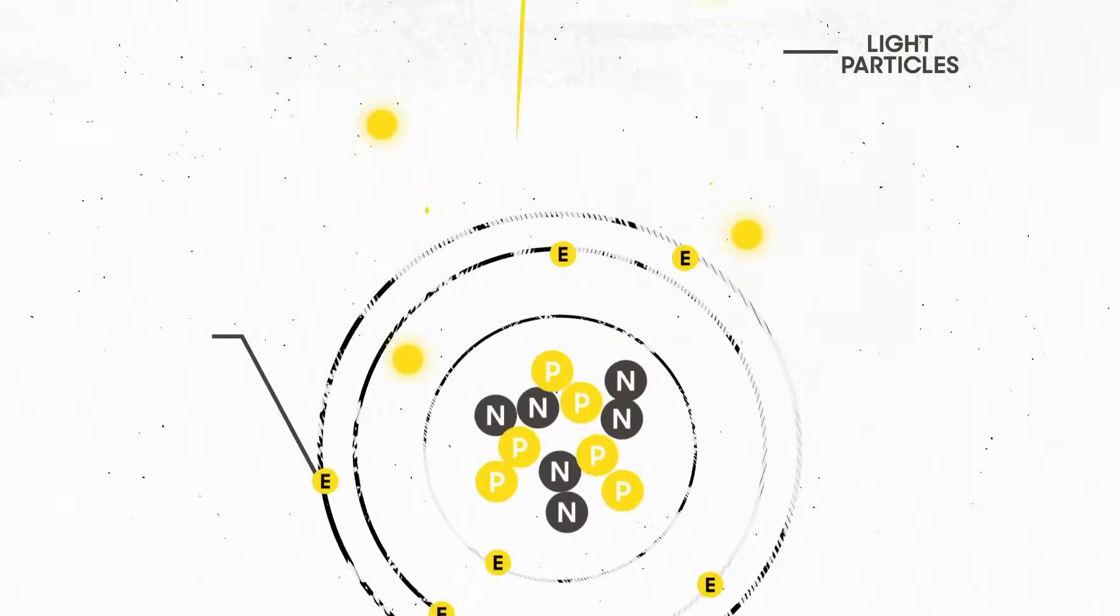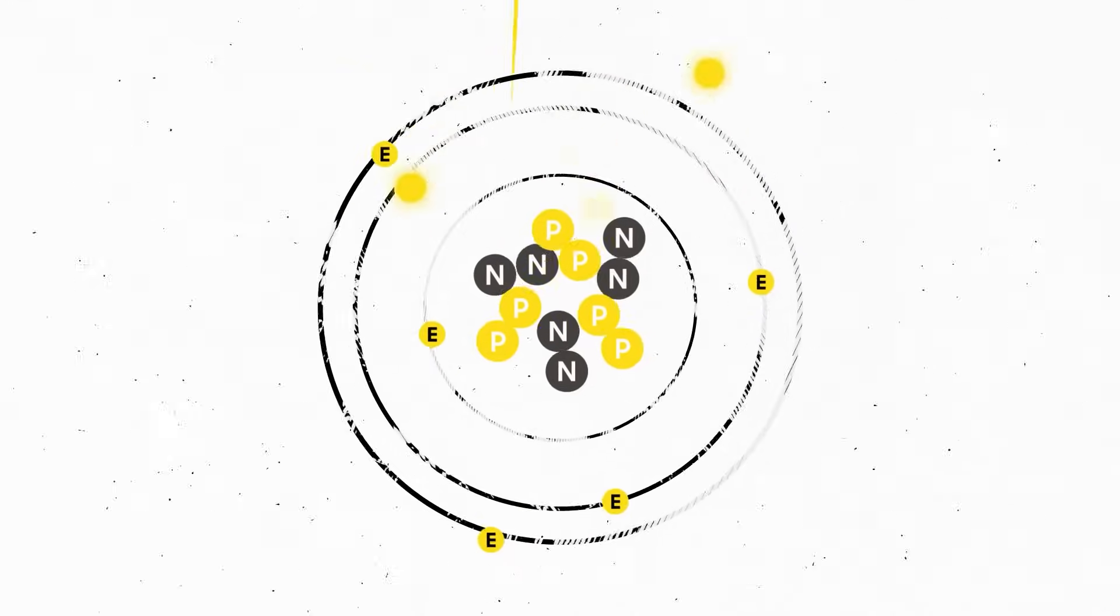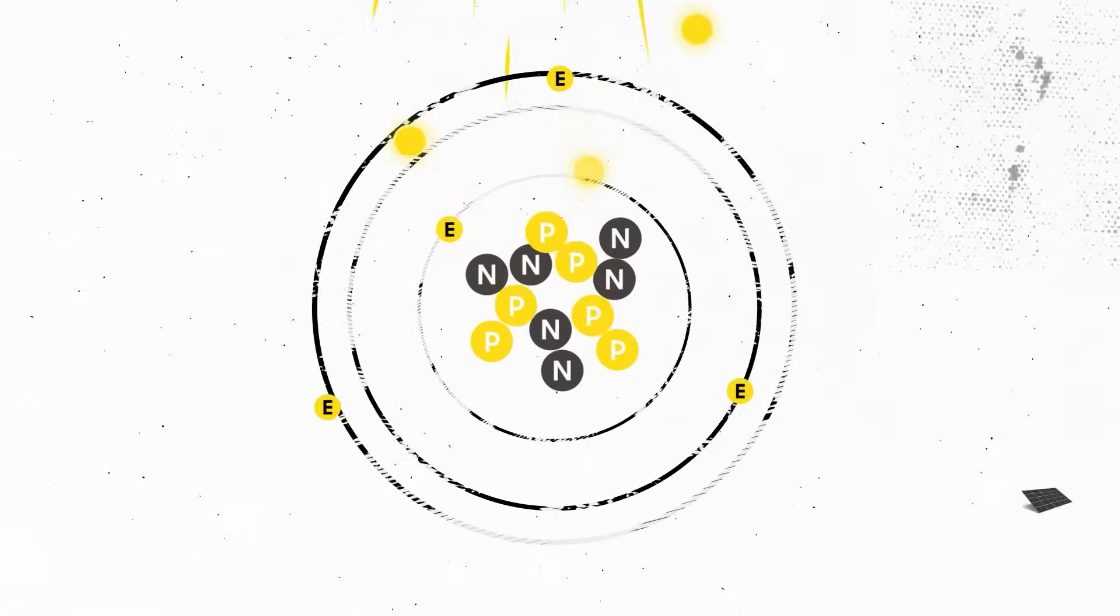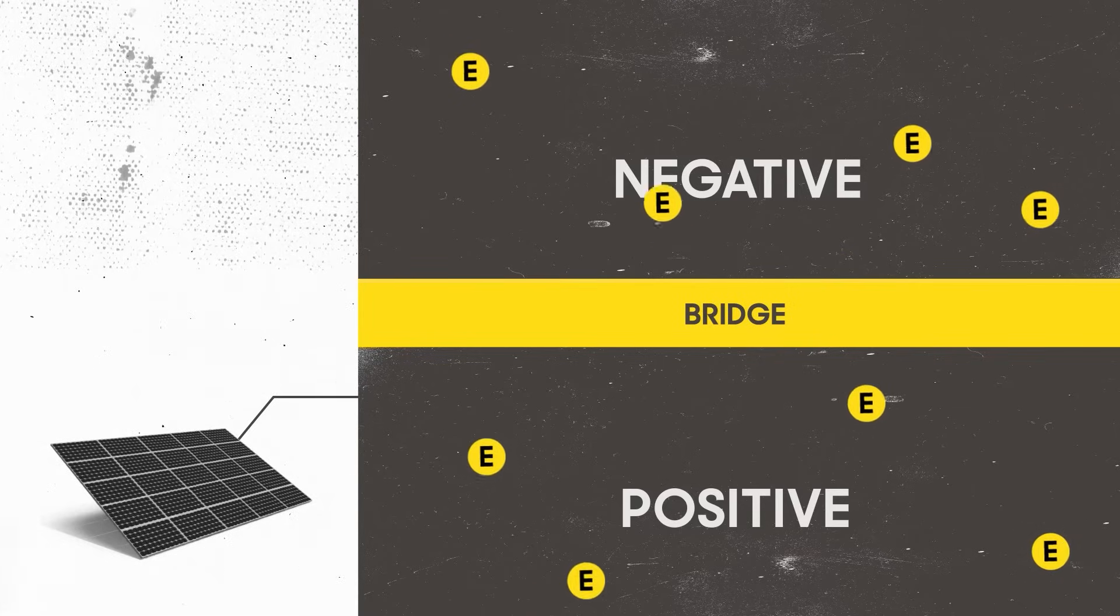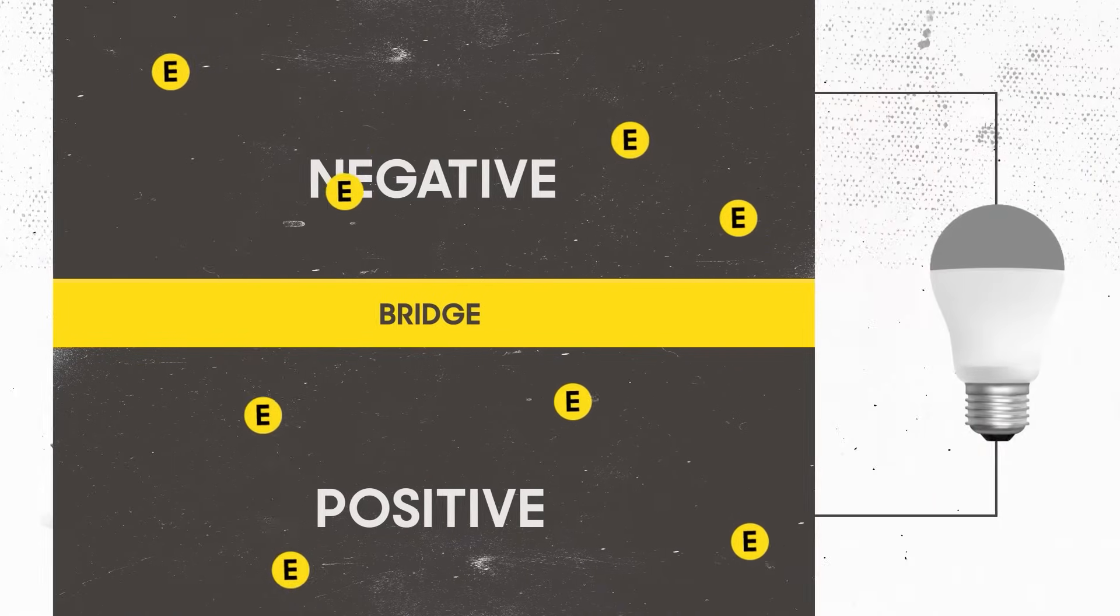When sunlight hits the cell, light particles knock some of the electrons within the silicon free from their bonds. These are drawn to the positively charged silicon layer. However, a bridge between the two layers only lets electrons cross in one direction, from positive to negative.